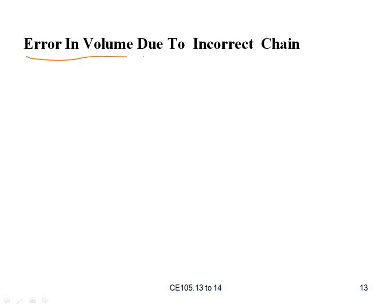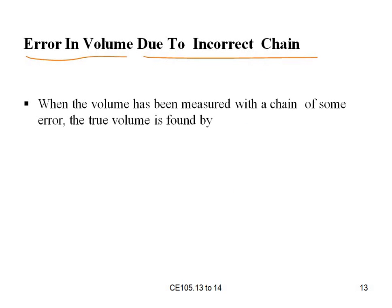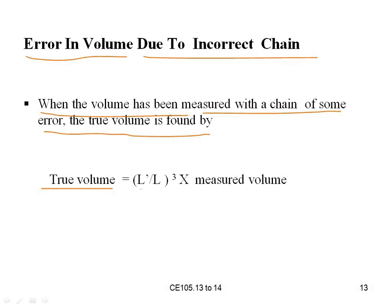For error in volume due to an incorrect chain: when the volume has been measured with a chain having some error, the true volume is found by: True Volume = (L' / L)³ × Measured Volume.